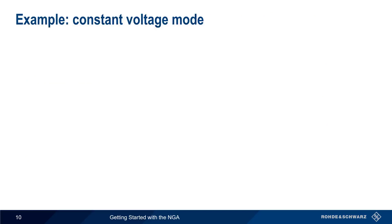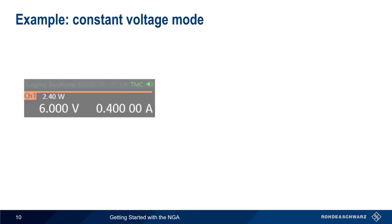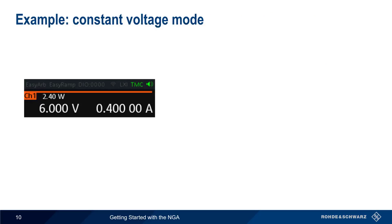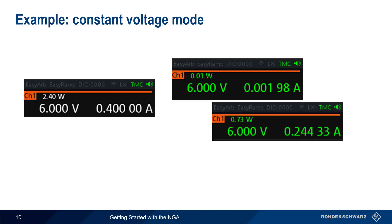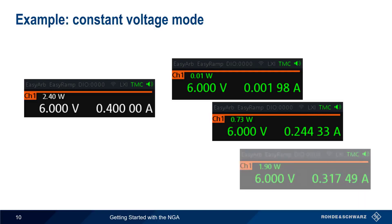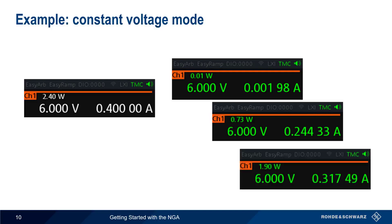Let's look at an example of this on the NGA. We configure the output voltage to be 6 volts and enter a current value of 400 milliamps. After enabling the output, the NGA will hold the output voltage steady, or constant, at 6 volts, even if the current changes, as long as the current remains below the configured threshold of 400 milliamps. Since we're in constant voltage mode, the values of voltage, current, and power are all displayed in green.